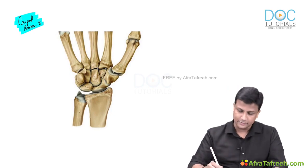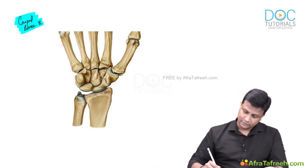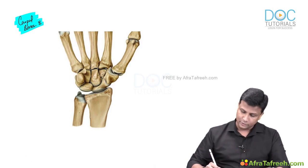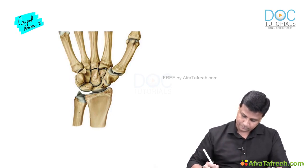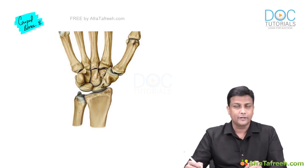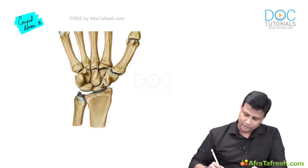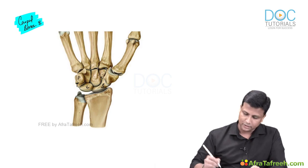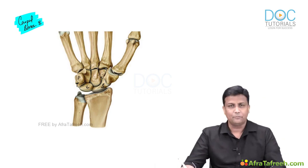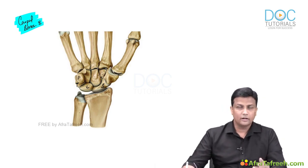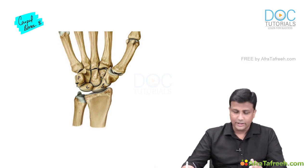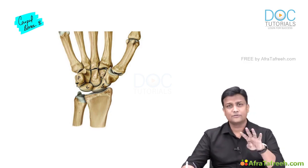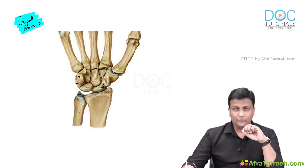In the proximal row, you are able to see the scaphoid, and then medial to that will be the lunate, then triquetrum, and above that you are able to see one small bone — that is your pisiform. So scaphoid, lunate, triquetrum, and pisiform — these four are present in the proximal row.